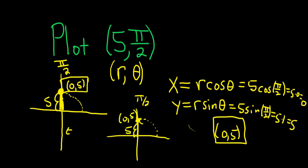So that ordered pair must be 0 comma 5. You've actually found the rectangular coordinates just by plotting the polar coordinate. I hope this video has been helpful.